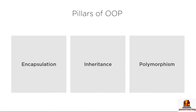Of these three pillars, encapsulation is, to me, the most important. Encapsulation is a technique you need to apply every day with every bit of code that you write. Polymorphism is useful too, and you'll probably see it in day-to-day C# programming. Inheritance is, in my opinion, often overrated. You'll probably work with classes that inherit from others every day, but in solving your own problems, encapsulation is the key to good software design.